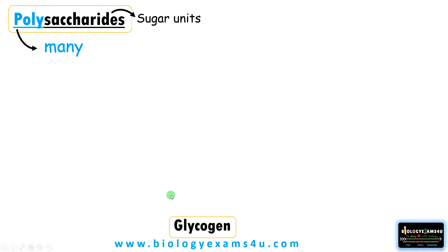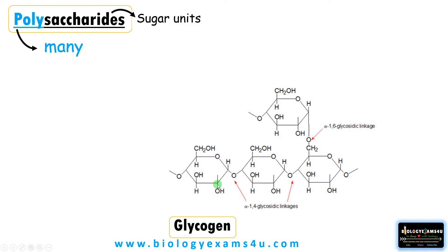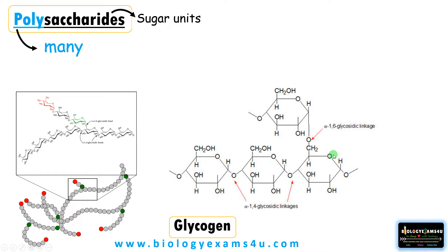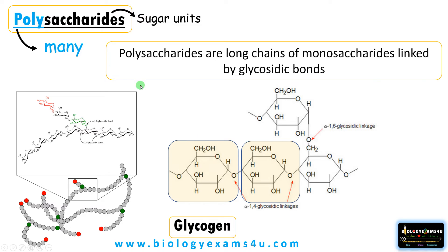Let's take one example: glycogen. Glycogen is made up of many glucose units joined by alpha-1,4 glycosidic linkage and alpha-1,6 glycosidic linkage. This is carbon-4 and carbon-1, therefore the linkage is called alpha-1,4 glycosidic linkage, and at the branching points there is alpha-1,6 glycosidic linkage. So polysaccharides can be defined as long chains of monosaccharides joined by glycosidic bonds.